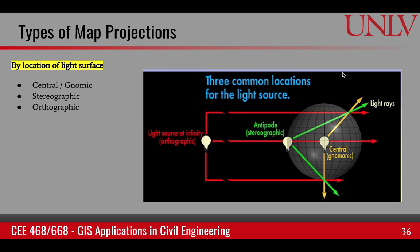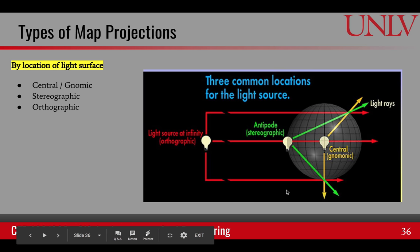The next classification is based on where you put the light source, and there are three types: central or gnomonic, stereographic, and orthographic. Central means the light source is at the center of the earth. Stereographic means the light source is at the opposite end of the earth, also called the antipode. Orthographic means the light source is at infinity, so all light rays are parallel to each other.